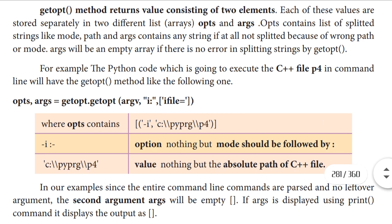For example, the Python code which is going to execute the C++ file P4 in command line will have the getopt method like the following one. So now we are going to execute one C++ file — that C++ file name is P4. So for that, how to write the command: opts, args is equal to getopt.getopt. So here we have three parameters: argv, i colon — so i colon means input mode. Next, we are using square bracket i file equals.